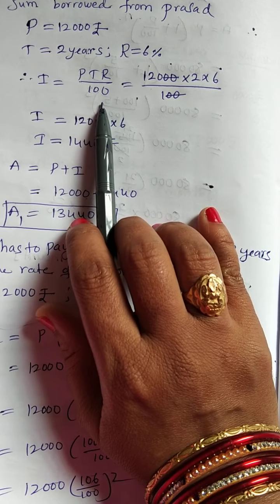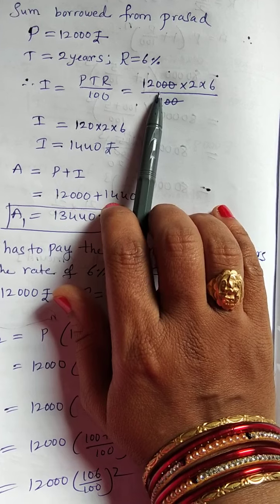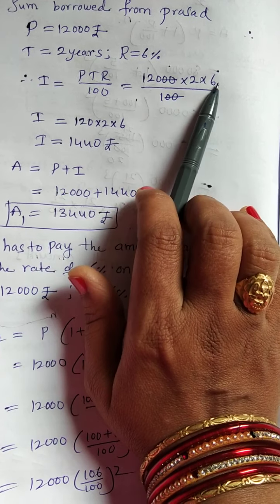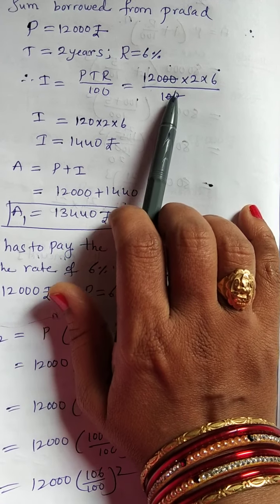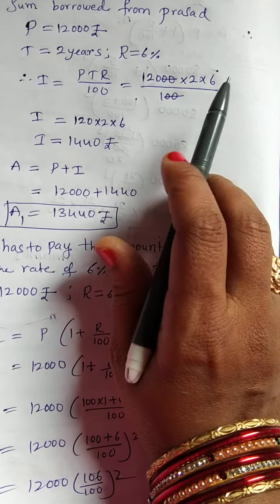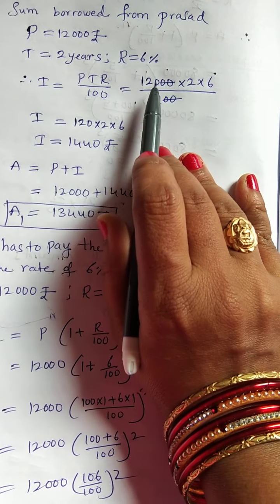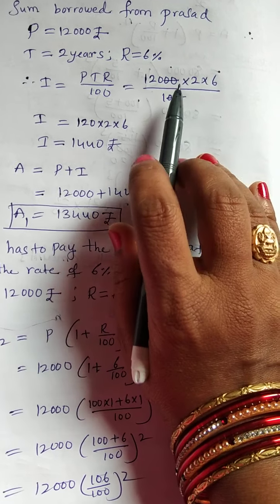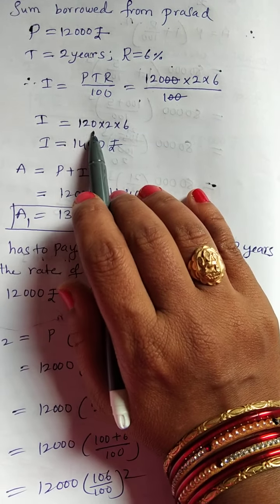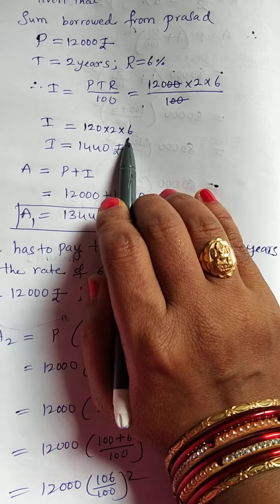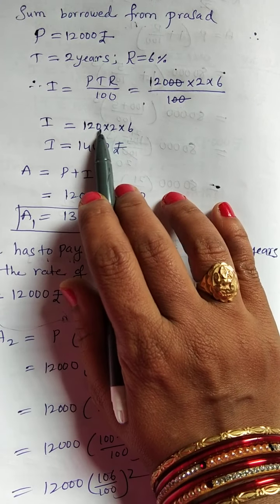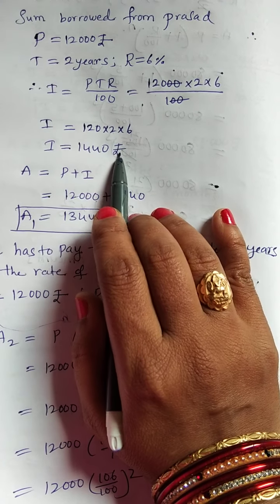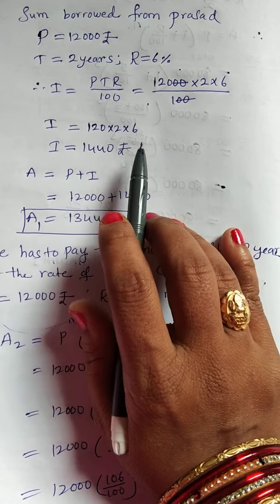I is equal to PTR by 100. So, 12,000 into 2 into 6 by 100. Two zeros, two zeros, we can do the cancellation because numerator and denominator same. Now, I is equal to 120 into 2 into 6. If you multiply these three numbers, you will get 1,440 rupees.